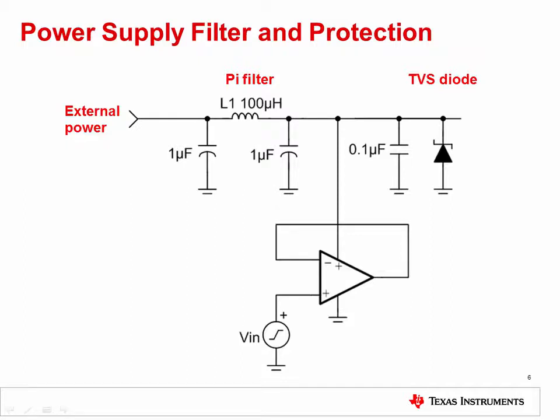Besides the input and output pins, another common entry point for harmful EOS energy is the power supply. The TVS diode is also effective in suppressing EOS energy on the power supply. Filtering, such as the PI filter shown here, can also minimize the amplitude of any power supply glitch.